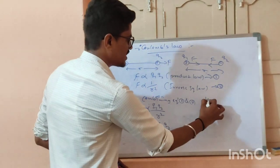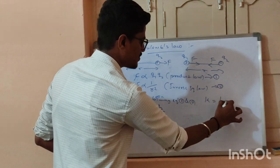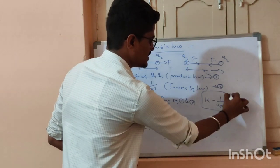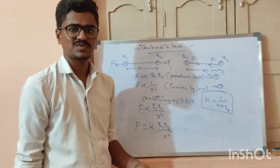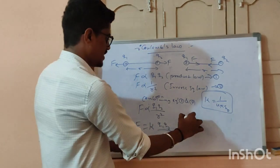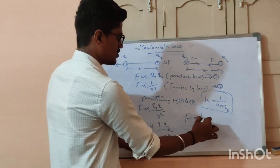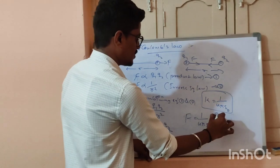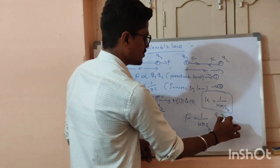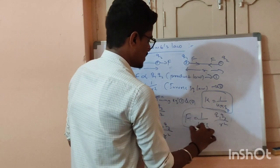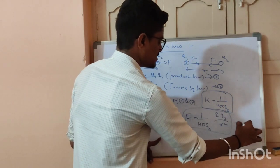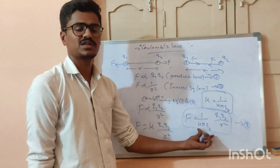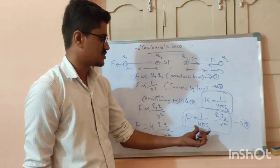The value of the constant K is 1 divided by 4π epsilon. So F equals K times Q1 Q2 divided by r squared. This is the equation of electrostatic force, related to the constant value K.